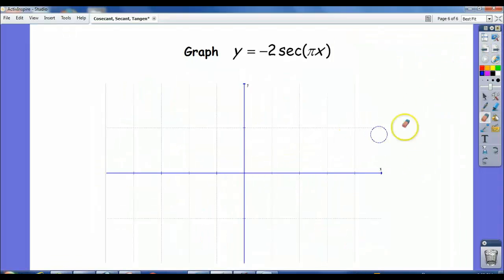For this one, rather than graph secant directly, we're going to first graph y equals negative two cosine of pi x. And that is an amplitude of two and a period of two pi over pi, which is two. So that'd be a two.